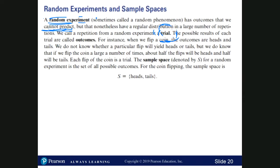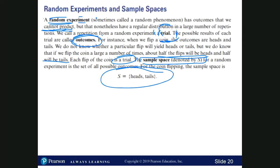The possible results of each trial are called outcomes. For instance, when we flip a coin, the two outcomes we could get are heads or tails. We do not know whether a particular flip will yield heads or tails, but we do know that if we flip the coin a large number of times, about half of the flips will be heads and the other half will be tails — a 50-50 probability. Each flip is considered a trial. The sample space is all the possibilities from that trial, and we use uppercase S to denote it. So the sample space for flipping a coin is heads or tails.